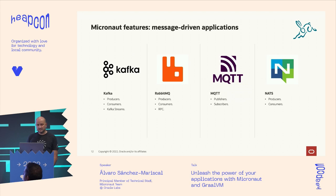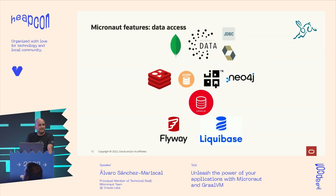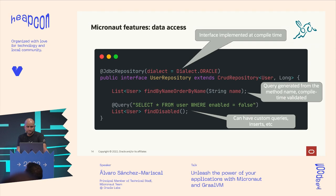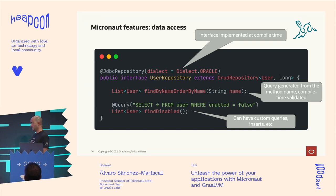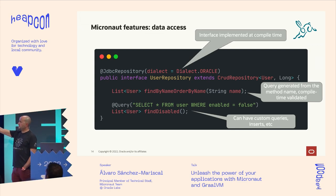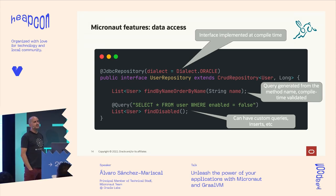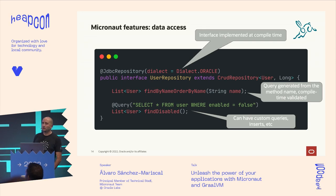In terms of messaging applications, the major technologies are supported. For data access, we have something called Micronaut Data, which follows the repository pattern. You define an interface and we implement it at compile time. If you define a method like 'findByName', Micronaut Data will figure out the query that needs to be implemented based on the method name.